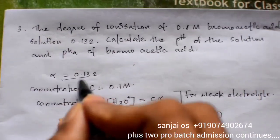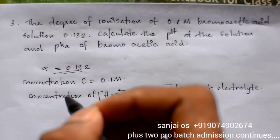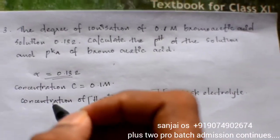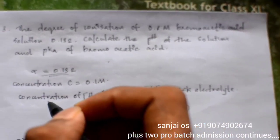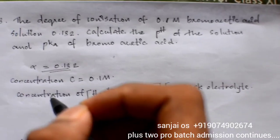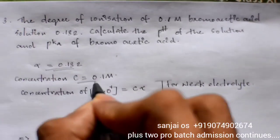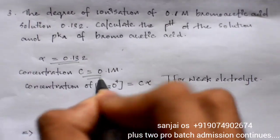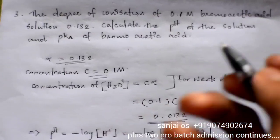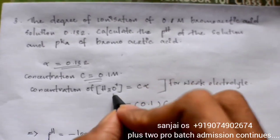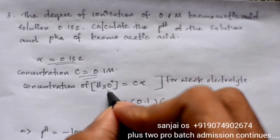Alpha equals 0.132. That is the degree of ionization. The degree of ionization relates to concentration of H₃O plus.